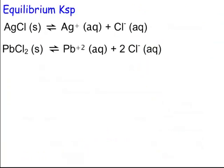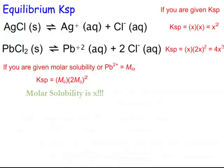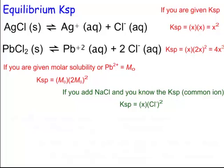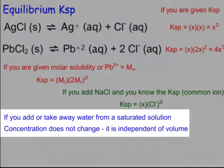Let's take a look at equilibrium for Ksp. If you're given Ksp for a simple case, it's just an X squared problem — you just take the square root. For something like the second reaction, you do 4x³ because it's x times (2x)², which is 4x³ — divide by 4 and take the cube root. If you're given molar solubility, which is X, you can use 4x³ for the second reaction or square it for the first. Remember: molar solubility is X. If you add or take away water from a saturated solution, concentration does not change — it's independent of volume.